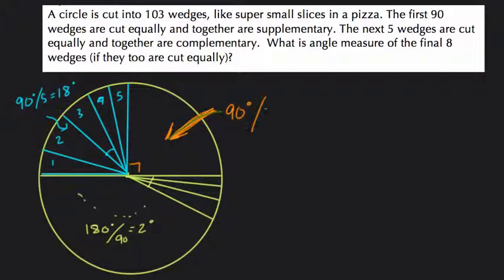So it's 90 degrees cut into 8 pieces. How big is that? Well, 8 goes into 90. 8 goes into 8, 10 times. So it goes into 90, 11 times with a remainder of 2.